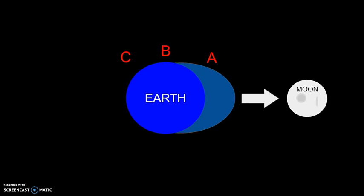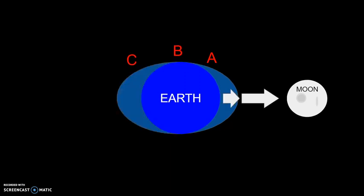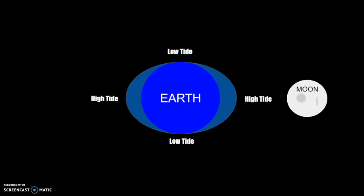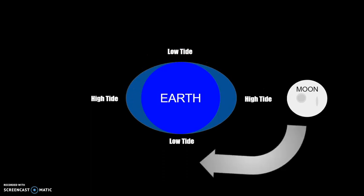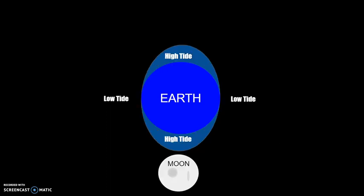Then it pulls point B, which is the solid earth, a little bit less than point A, and then it pulls C a tiny bit. Now, that causes two high tides and two low tides to happen. When the moon revolves around the earth, the high tide and the low tide move with it.